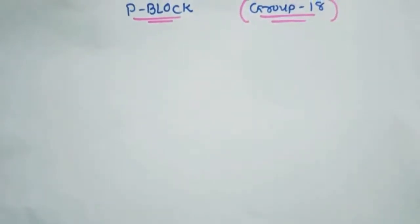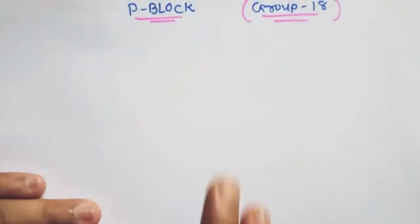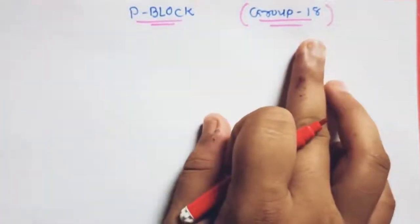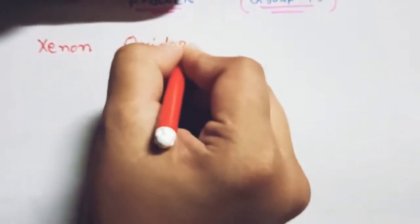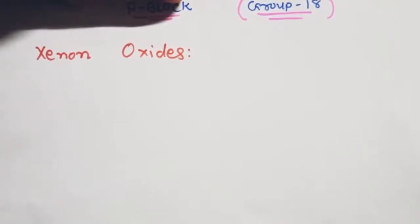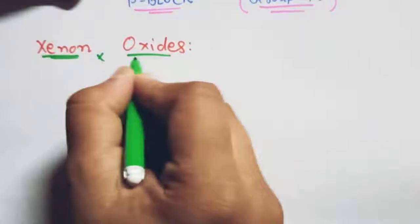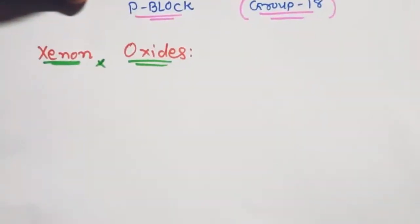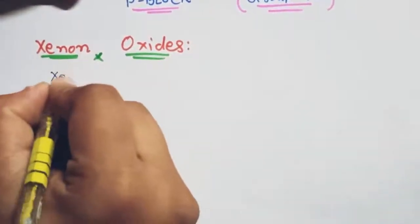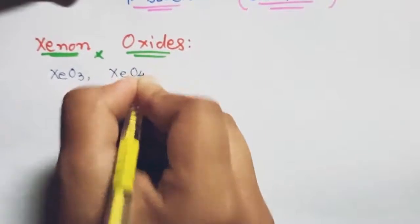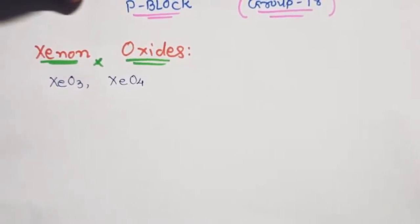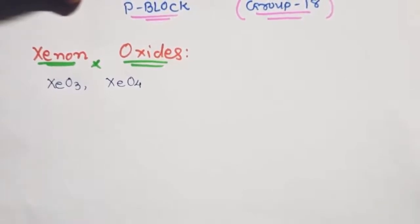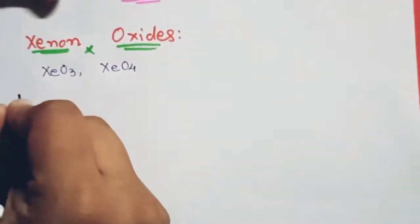Hello students, I am Krishna Nayak, your chemistry teacher. In properties of elements, we are discussing group 18 elements. Today we are going to discuss xenon oxides — specifically xenon trioxide and xenon tetroxide.